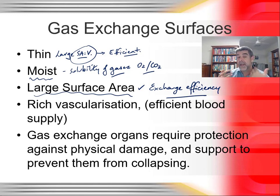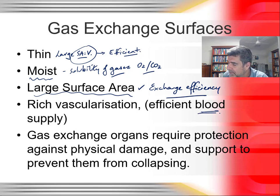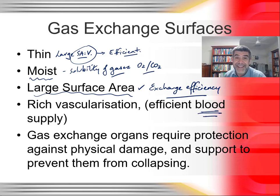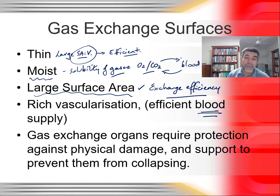Rich vascularization means we need lots of nice, rich blood vessels — a good blood supply in the area where gas exchange is occurring. This allows movement of gases directly into or out of the blood, depending on which gas we're talking about, making the process as efficient as possible.